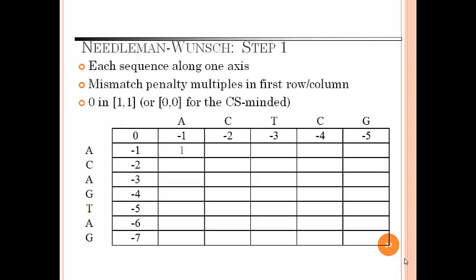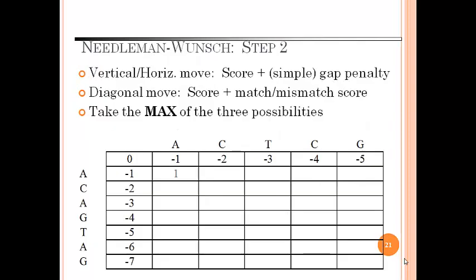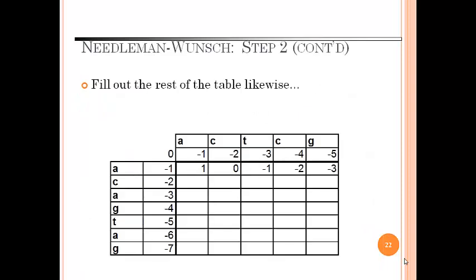For Needleman-Wunsch algorithm, step 1 is place each sequence along one axis. Mismatch penalty multiplies in first row or column 0, 1, and 1. For vertical or horizontal move, score plus simple gap penalty. For diagonal move, score plus match and mismatch score. Take the maximum of three possibilities. We can similarly find out the table and we will complete the table likewise.